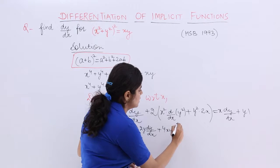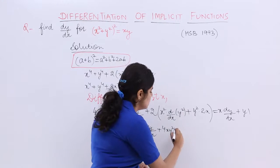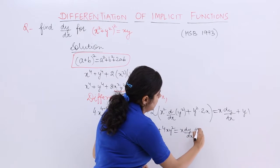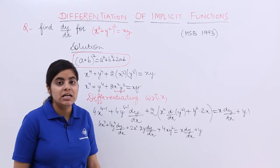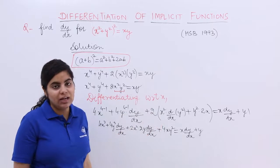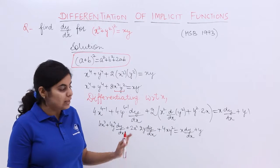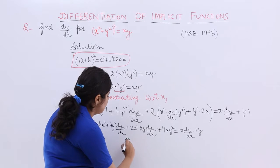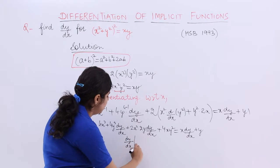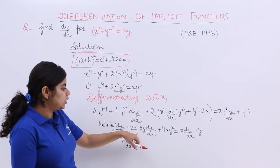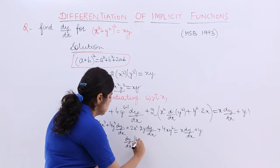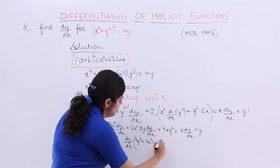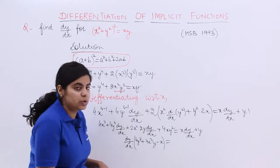4xy². Then it is equal to x dy/dx plus y. Right? Now wherever you have dy/dx, you can take it out as common. And the other terms to go to the other side of the equal to. So it becomes dy/dx multiplied by 4y³. Right? Plus 4x²y minus x which is equal to...